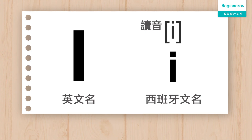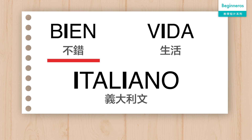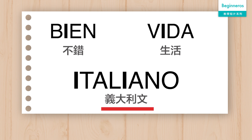I in Spanish is called E. It has only one pronunciation in any situation, which is E. For example, Bien, Vida, Italiano.